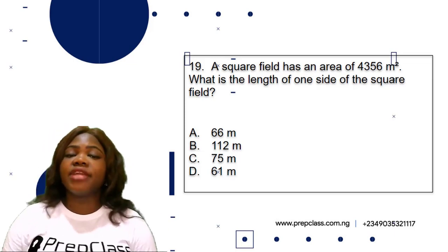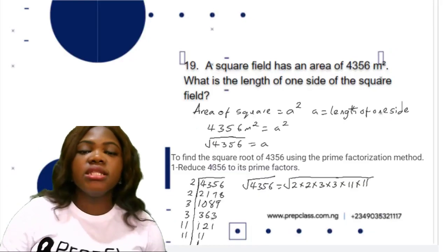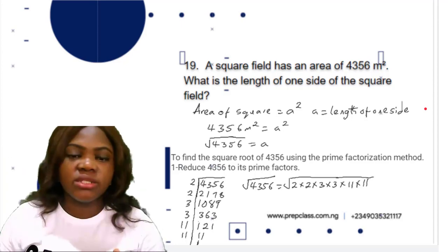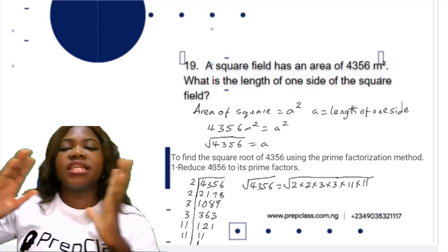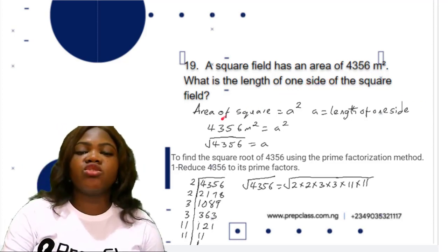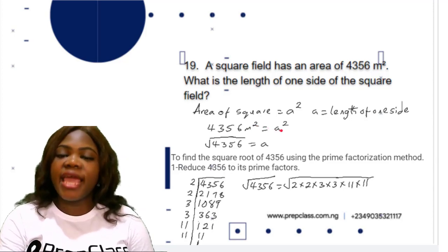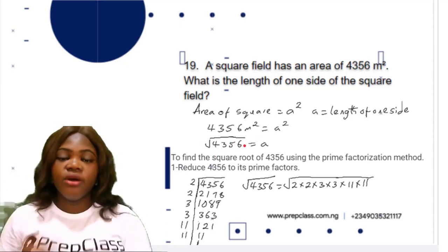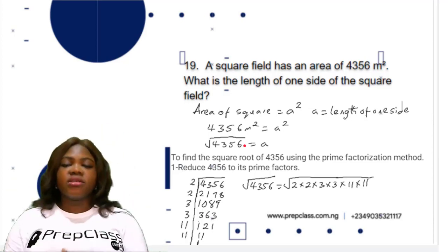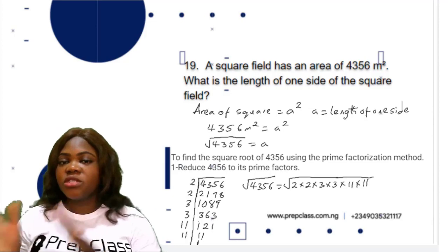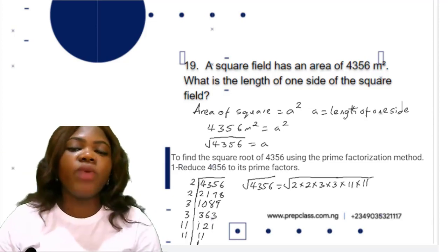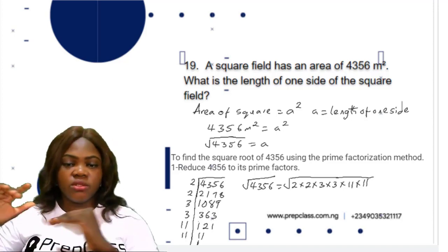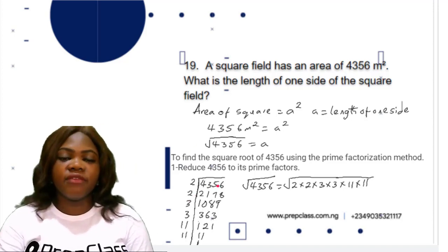The area of a square is a², where a is the length of one side. We are given the area as 4,356 m², so to find a we need to find the square root of 4,356. Using the prime factorization method, the first step is to reduce 4,356 to its prime factors. 4,356 divided by 2 is 2,178.